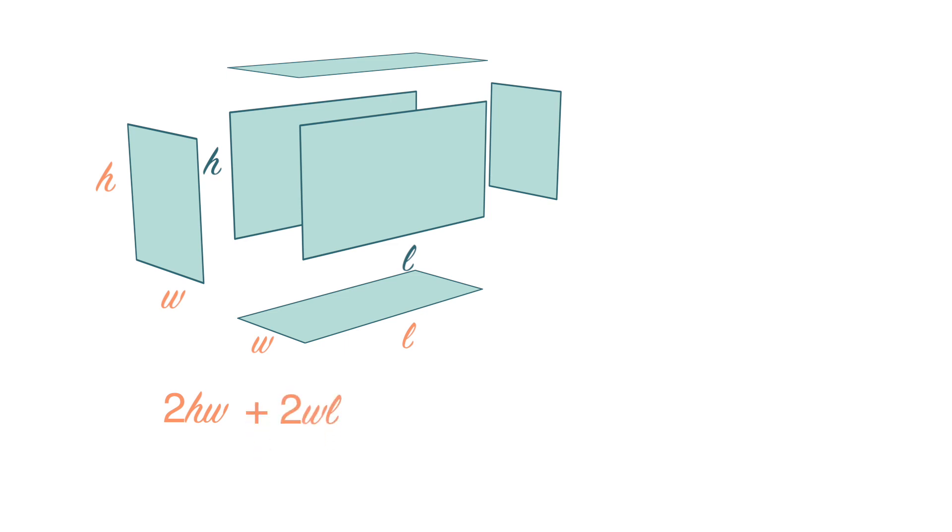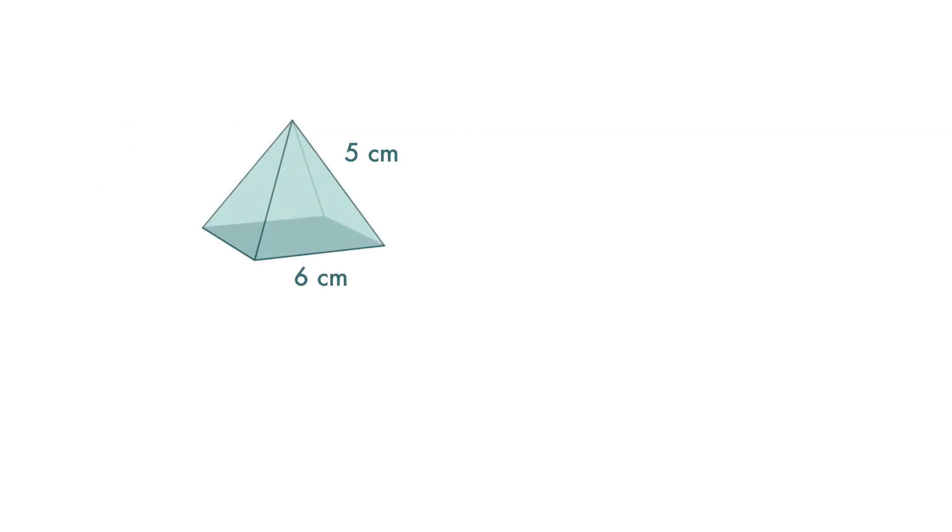And finally, we want to find the area of the front and back faces. The area of each rectangle here is H times L, and since the two rectangles are of the same size, it's 2 times H L. So this is the surface area of this cuboid.